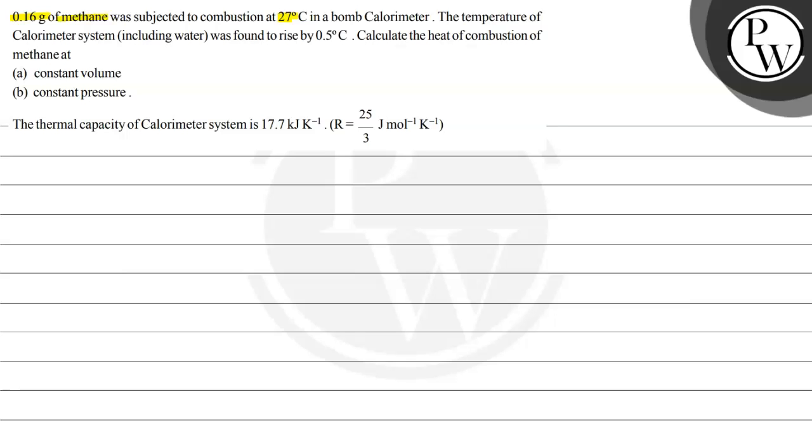The temperature of calorimeter system including water was found to rise by 0.5 degrees Celsius. Calculate the heat of combustion of methane at constant volume and at constant pressure. Given the thermal capacity of the calorimeter system is 17.7 kJ/K and R = 25/3 J/(mol·K).